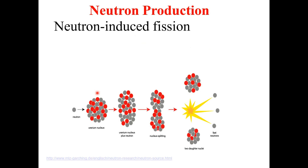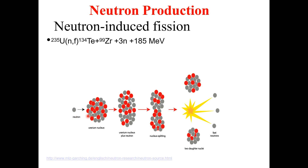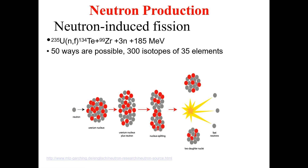We can also get neutrons during neutron-induced fission. When we bombard neutrons on a uranium nucleus, we get an excited nucleus which then undergoes fission, splitting into two daughter nuclei with a huge amount of energy along with some fast neutrons. Neutrons are a necessary product during the fission of uranium-235. We can get up to 300 isotopes of 35 elements from approximately 50 possible fission reactions.